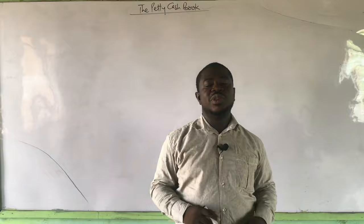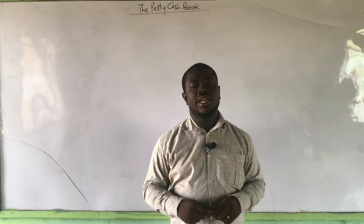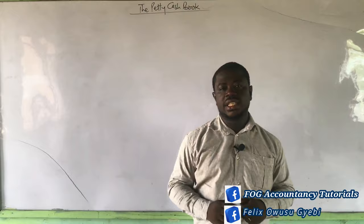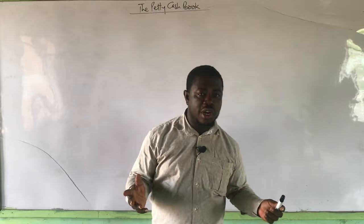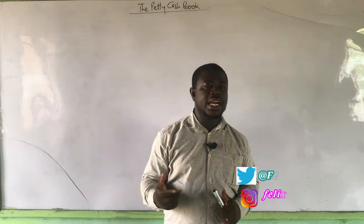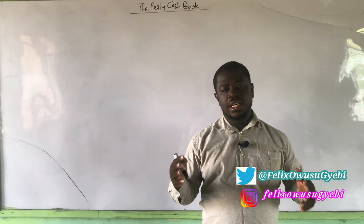Good day. Welcome to another session of Fog Accountancy Tutorials. Today we are going to look at the Petty Cashbook and the Imprest system, how it works. What I want you to understand right from scratch is that there is a cashbook called Petty Cashbook. As the name suggests, petty actually means small. So what we are going to learn about is a small cashbook, which we try to maintain separately from the main cashbook — the two column and the three column cashbook in the business.